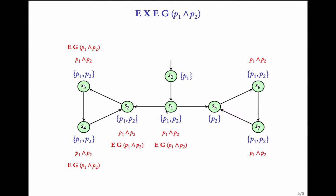What about S1? S1 has a successor which is labeled EG(P1 ∧ P2), so we do not modify it. S2 has a successor S3 which has this label, so we do not modify it either. S4 has a successor labeled EG(P1 ∧ P2), so we do not do anything to it. So for S1, S2, S3, and S4, there exists a path where P1 ∧ P2 is always true. We are done with EG(P1 ∧ P2).